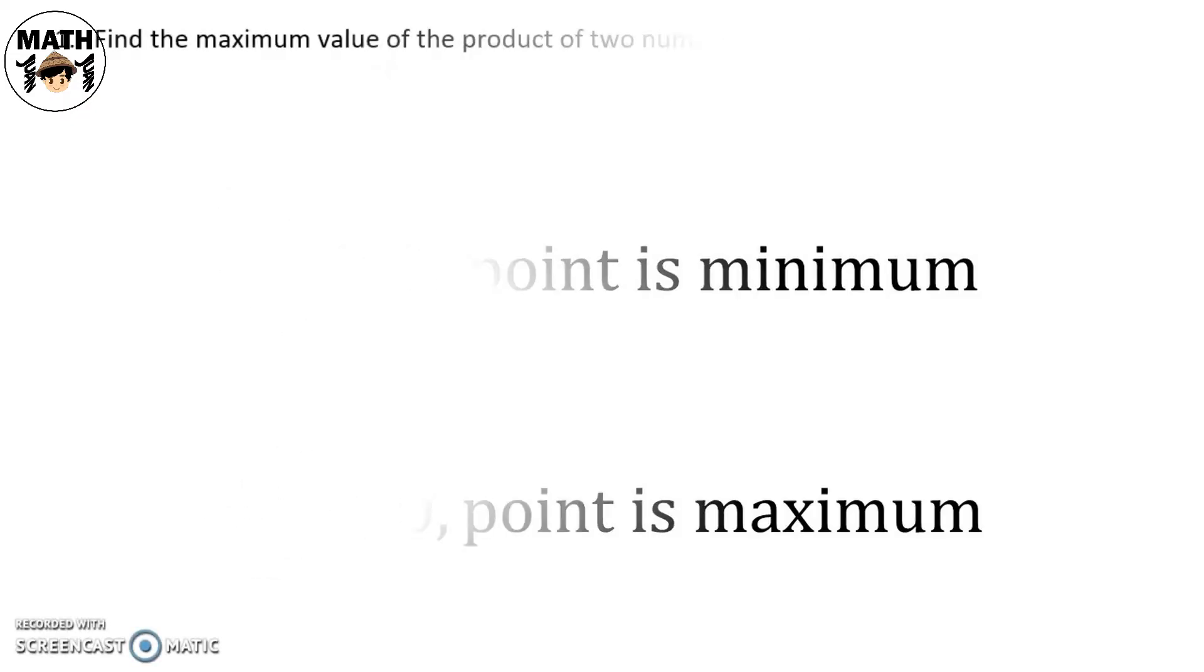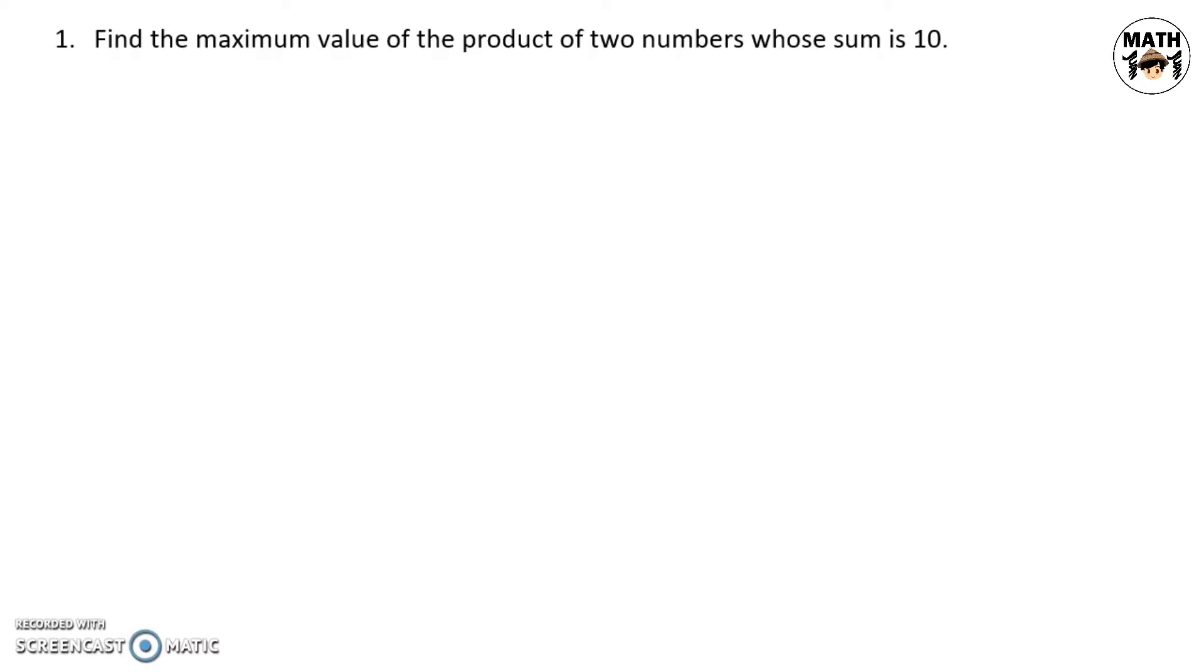Now, let us try to solve problems. Problem number one: find the maximum value of the product of two numbers whose sum is 10. Ang target natin i-maximize dito is the product. So, we must formulate a function representing the product. Before we do that, let us first declare or represent the variables. Let x and y be the numbers, and p be their product. The sum of two numbers is 10: x plus y equals 10. And their product p equals xy.